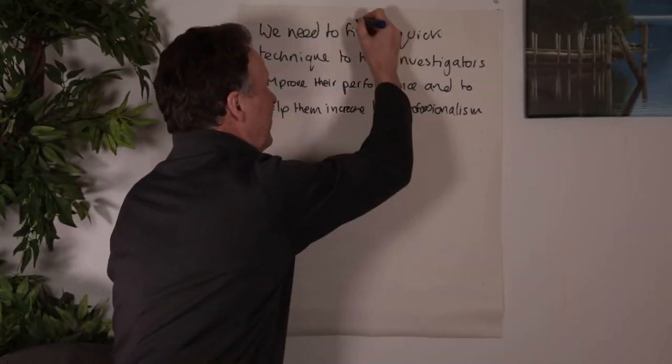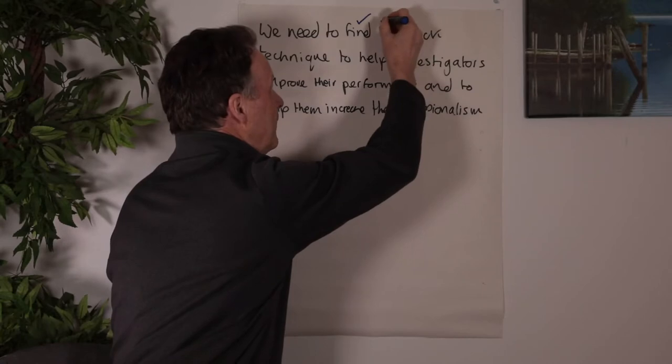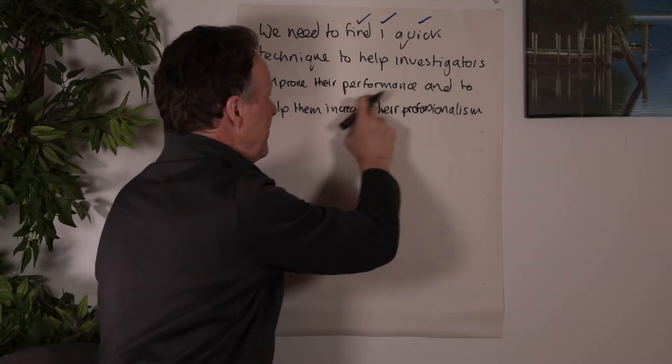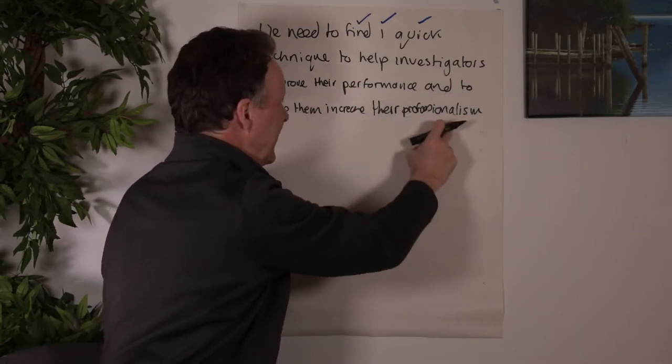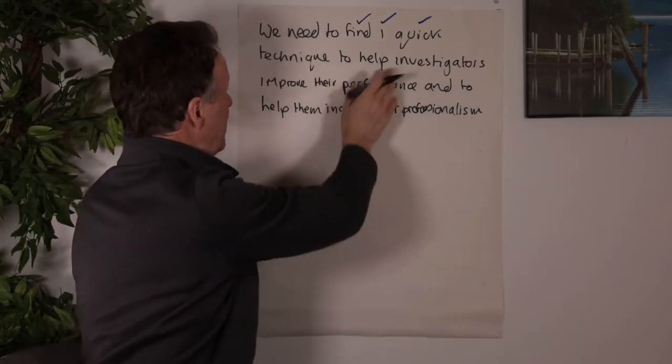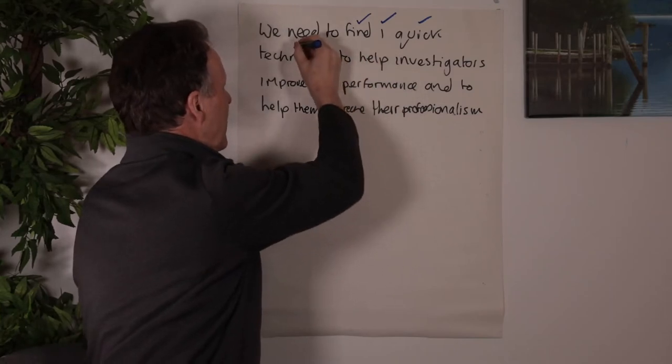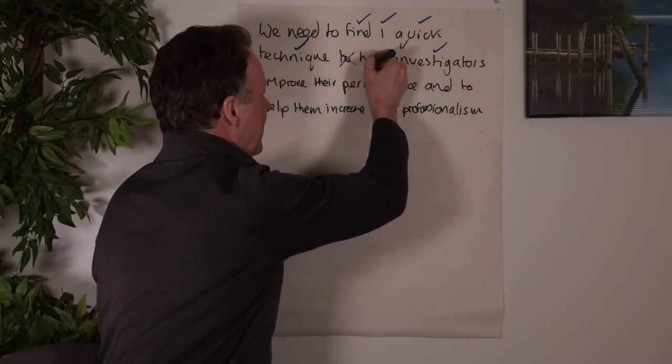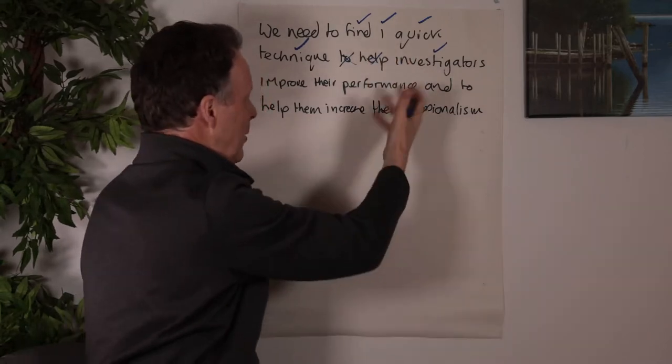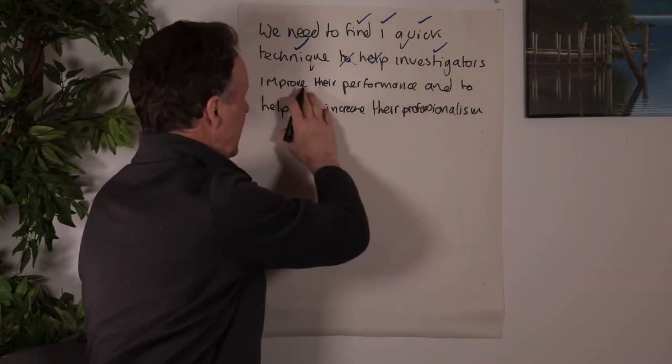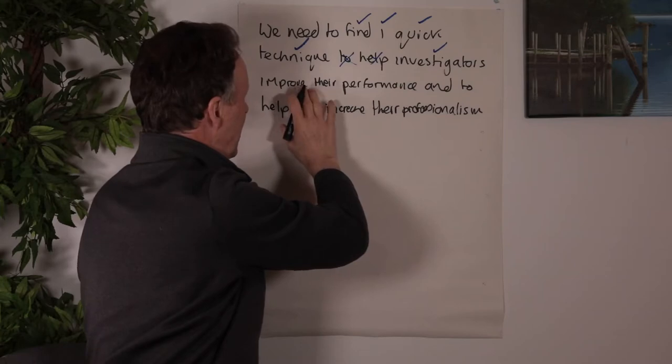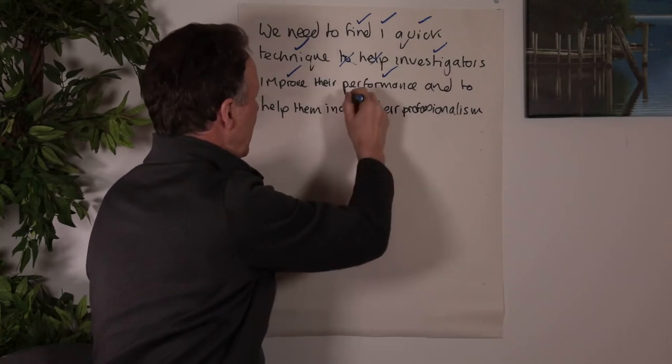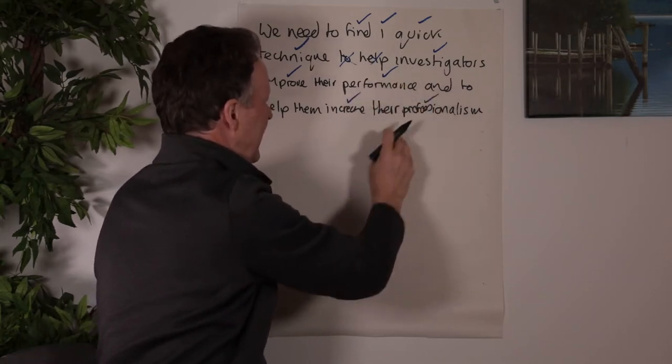So here I would probably choose find one quick. So I've got, we need to find one quick technique to help investigators improve their performance and to help them increase their professionalism. So I'd probably take find one quick. I'd probably use technique, help investigators. I don't need to help because that's not part of the core information, and it's where I improve performance and increase professionalism.